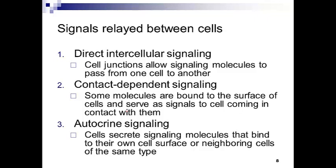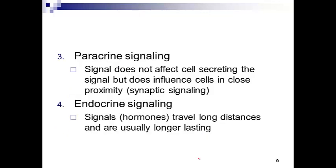How are signals relayed between cells? We have direct intercellular signaling, where junctions allow signal molecules to flow directly from one cell to another. We have contact-dependent signaling, where molecules bound to the surface of cells recruit other cells to come in contact. We have autocrine signaling — 'auto' means self — where cells secrete molecules that bind to their own cell surface causing an additional response, stimulating itself. We also have paracrine signaling and endocrine signaling.